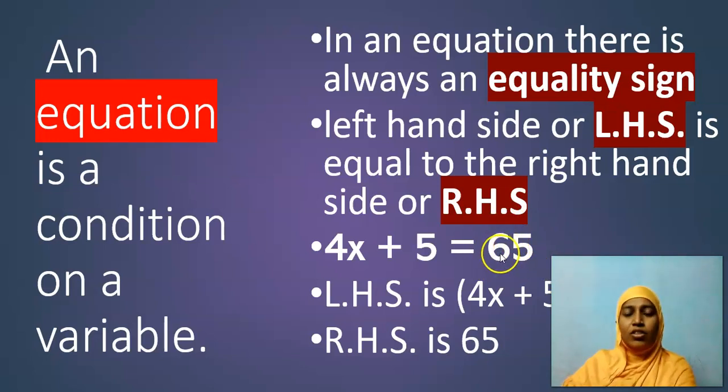Even here, in right hand side, you can have an expression, another mathematical expression like this: 4x plus 5 is equal to 6x minus 25. Even this is also an equation. We have variables in both the sides. Is it clear, my dear children?